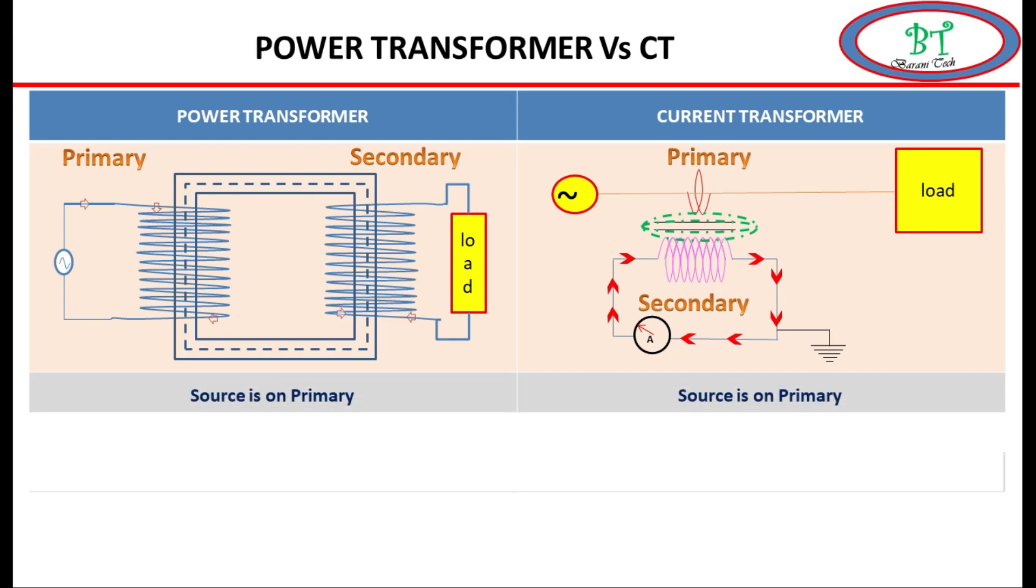Second, the load current flows on secondary side for the power transformer, but for CT the load current flows on primary side.